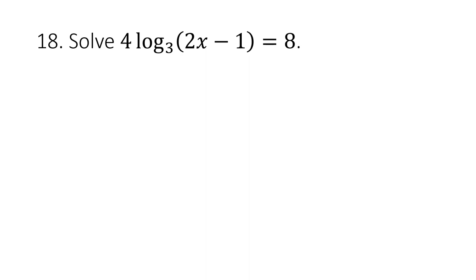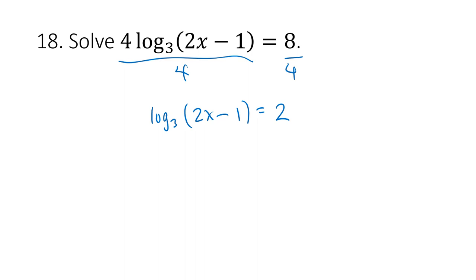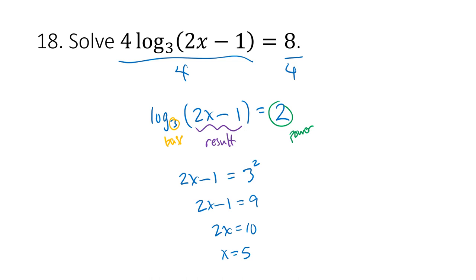For logarithmic equations, since our variable is inside a log, we use exponentiation to get it out. For 4 times log base 3 of (2x minus 1) equals 8: first divide both sides by 4 to get log base 3 of (2x minus 1) equals 2. This means 3 raised to the power 2 equals 2x minus 1, so 2x minus 1 equals 9, then 2x equals 10, giving x equals 5.